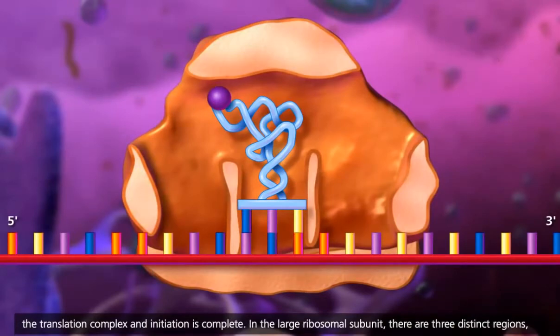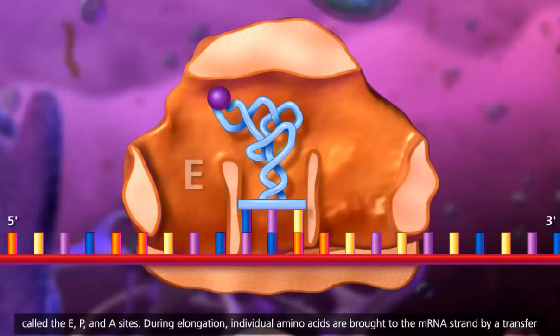In the large ribosomal subunit, there are three distinct regions called the E, P, and A sites.